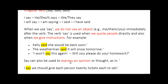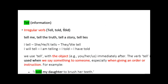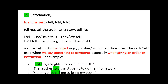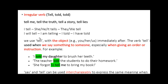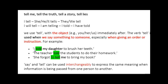We use 'tell' to convey information. Tell is an irregular verb — tell, told, told. Common phrases with tell include: tell me, tell the truth, tell a story, tell lies. We can use it with present simple, present continuous, future simple, past simple, and present perfect. With tell, we always need an object after it — tell me, tell him — and we use it to say something to someone, give an order, or give instructions.